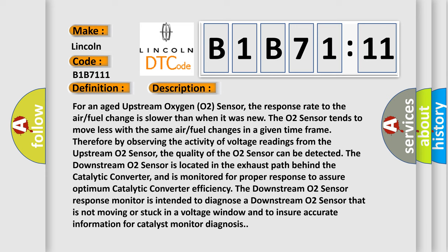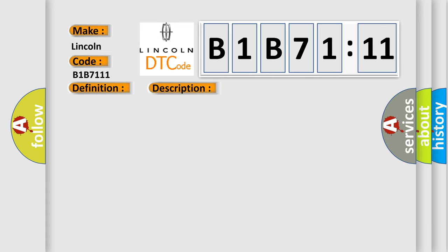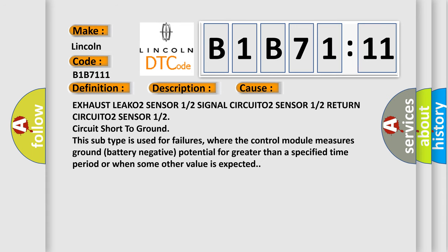This diagnostic error occurs most often in these cases: Exhaust LEAK, O2 sensor 1 or 2 signal CIRCUIT, O2 sensor 1 or 2 return CIRCUIT, O2 sensor 1 or 2 circuit short to ground. This subtype is used for failures where the control module measures ground battery negative potential for greater than a specified time period or when some other value is expected.